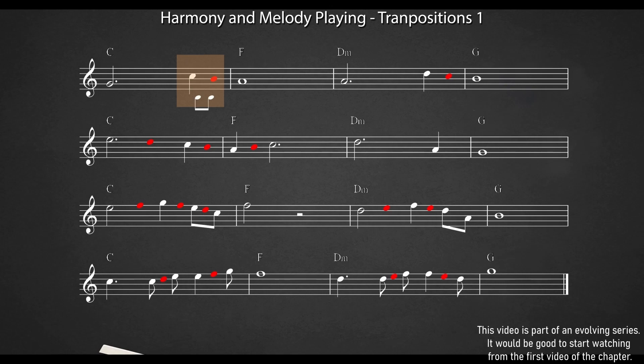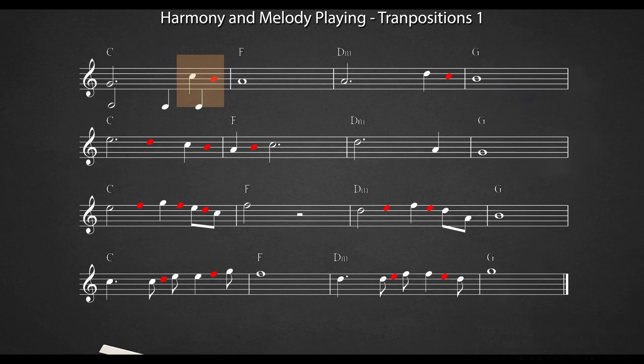We'll have a dotted half node and two eighth nodes. Or we can change the dotted half to a half node and have two quarter nodes in order to maintain the four beats of the measure.